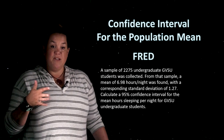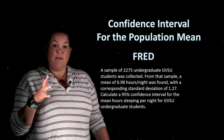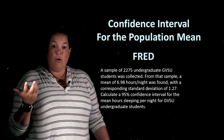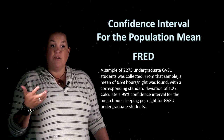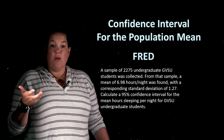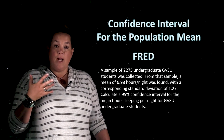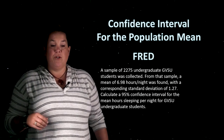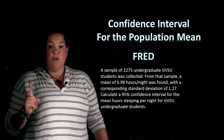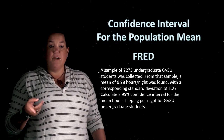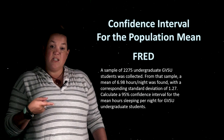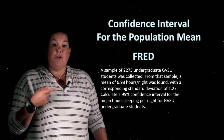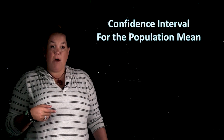Here is the example: we have a sample of 2,275 undergraduate GVSU students, and from that sample we are collecting information on the hours of sleep per night. The mean hours of sleep was found to be 6.9 hours per night with a corresponding standard deviation of 1.27. We're going to construct a 95% confidence interval for the mean hours of sleep per night, where GVSU students is our population.